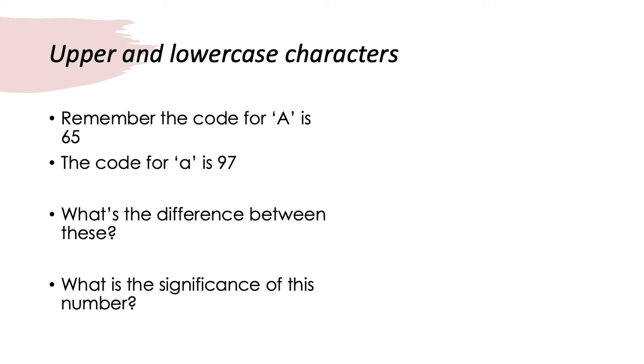So, what was this we were talking about in terms of upper and lowercase characters having different codes? And why does capital A have the code 65? And why does lowercase A have the code 97? What's the difference between these? And what's the significance of the difference?